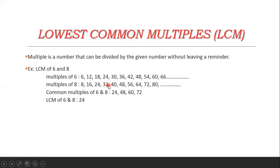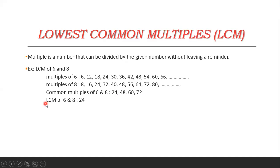These are the multiples of 6 and 8. Next step, we have to write the common multiples of 6 and 8: 24, 48, 72, etc. LCM means the lowest number among the common multiples. So in the common numbers 24, 48, 72, the lowest number is 24. Therefore, the LCM of 6 and 8 is 24.